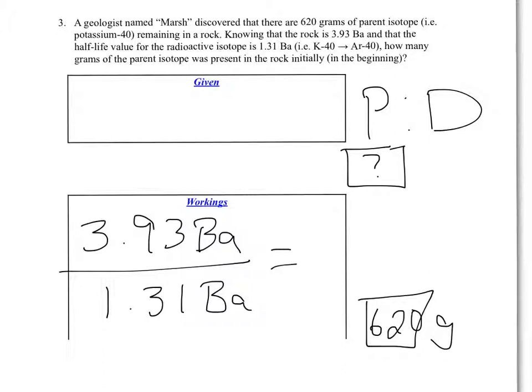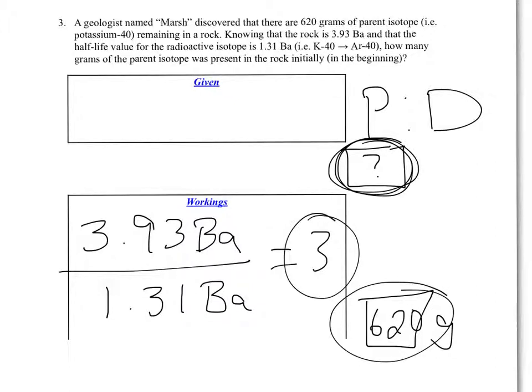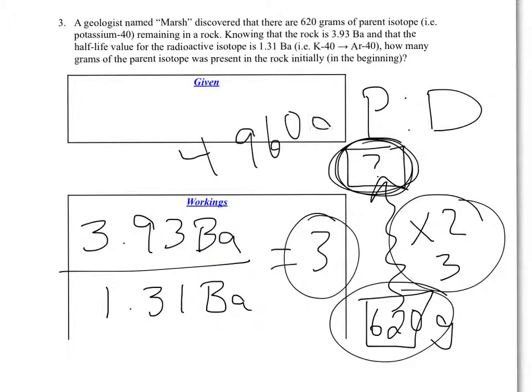And so we're going to see how many times the amount for one half-life divides into the age of the rock. So we're going to take 3.93 and divide that by 1.31. And we're going to determine that 3 half-lives have occurred in this particular case. So whatever this number was of grams of the parent in the rock in the beginning, it would have got divided by 2, divided by 2, divided by 2. And the answer would have been 620 grams. So this is a case where we're going to be going backwards. So instead of dividing by 2, we're going to multiply by 2, and we're going to do it 3 times. So we're going to go 620 multiplied by 2, multiplied by 2, multiplied by 2, and our final answer will be 4,960 grams. That's the amount of parent that was in the rock in the beginning.